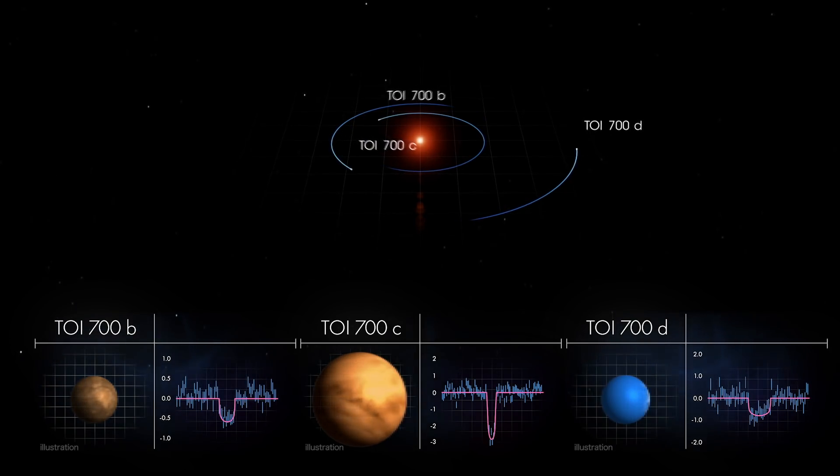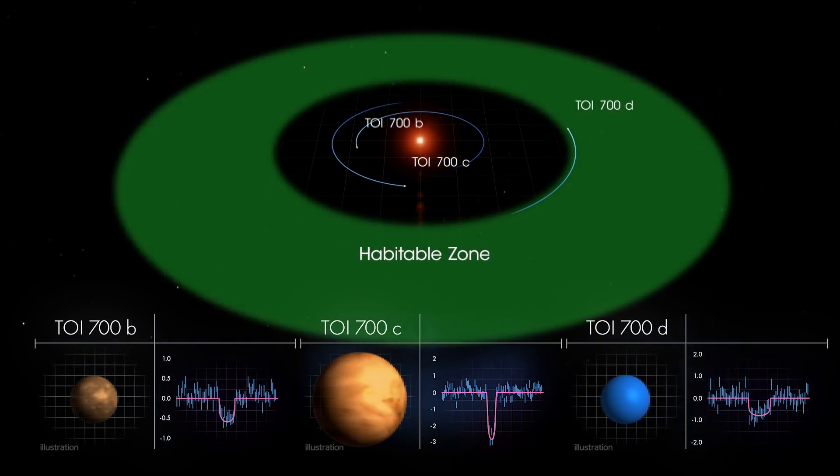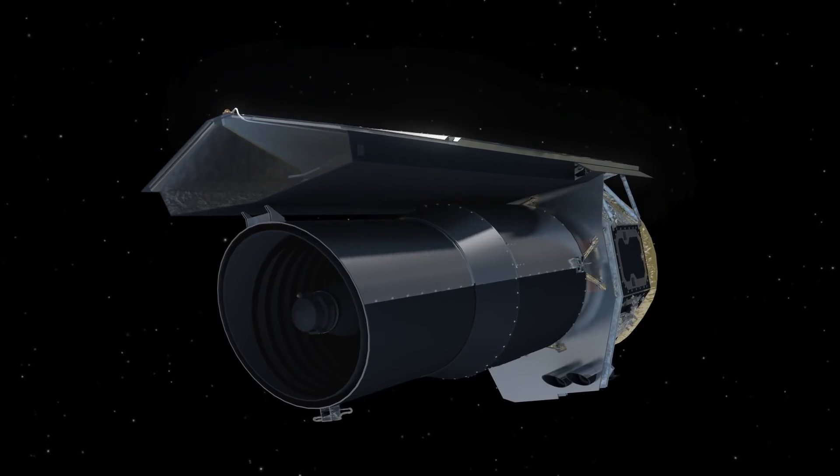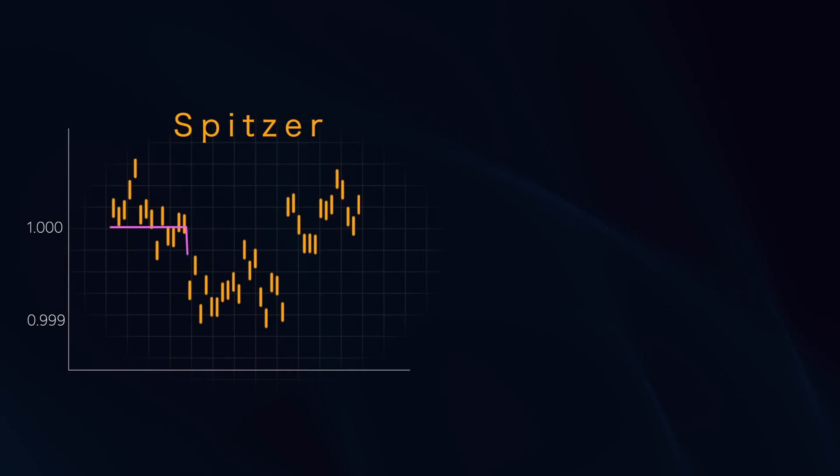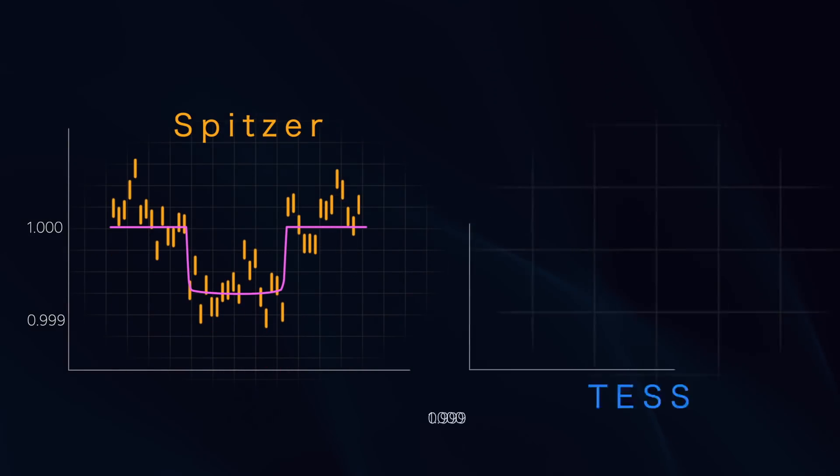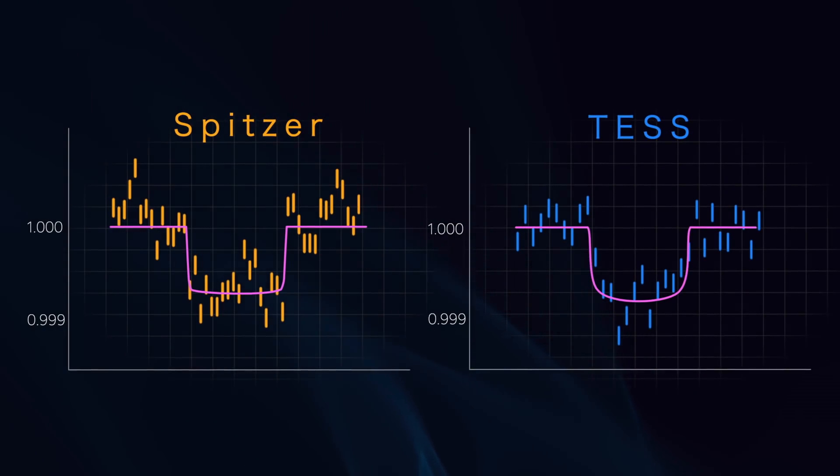But most importantly, TOI 700d is within the star's habitable zone. Scientists wanted independent confirmation of TOI 700d, so they monitored its star with NASA's Spitzer Space Telescope. Spitzer saw a clear transit from the outer planet, affirming its existence and improving scientists' certainty of the planet's size.